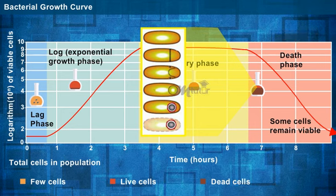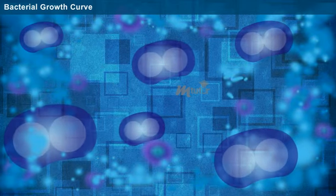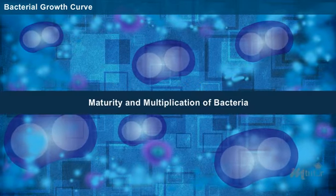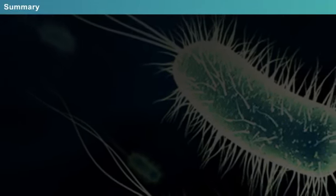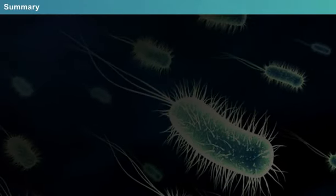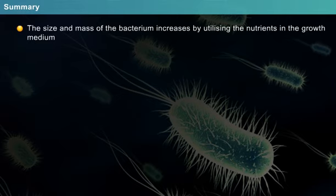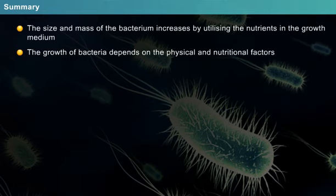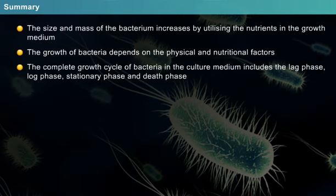By understanding these four phases, the researcher can optimize the conditions required for bacterial maturity and multiplication. Summary: When a bacterium is inoculated in a growth medium, the size and mass of the bacterium increases by utilizing the nutrients. The growth of bacteria depends on the physical and nutritional factors of the medium. The complete growth cycle of bacteria in the culture medium includes lag phase, log phase, stationary phase and death phase.